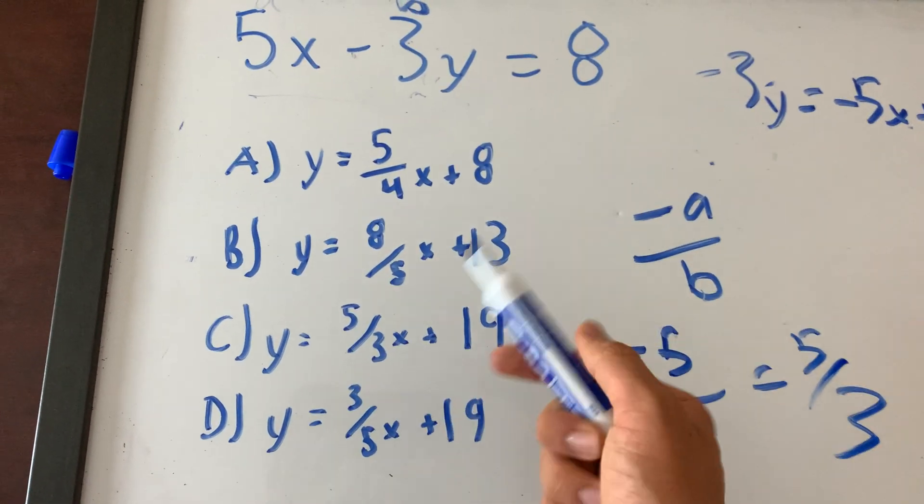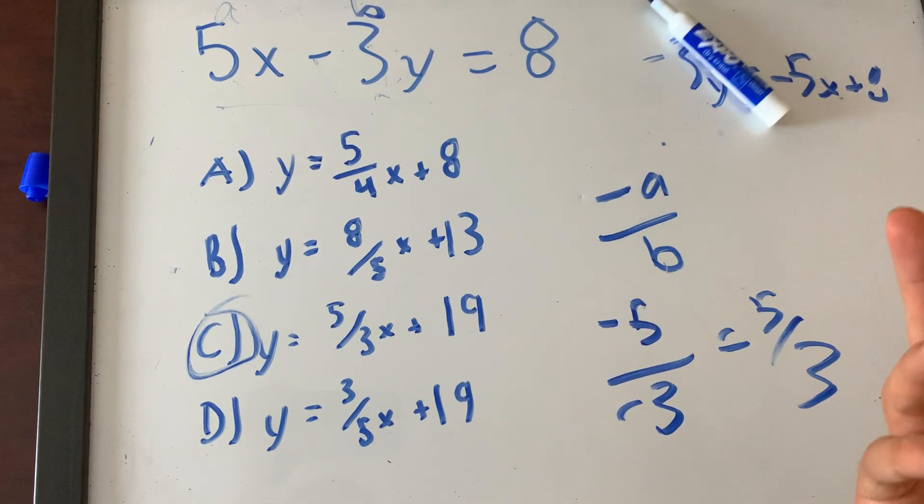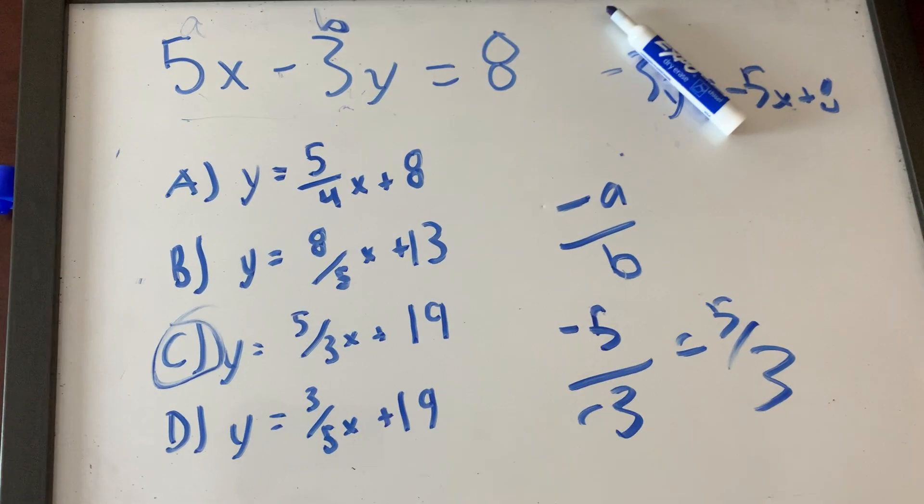Which of these slopes is 5 over 3? See, alright, I'm done. Boom. 30 seconds turned into like, what, 5 seconds, maybe 2 seconds if you're not talking to someone.